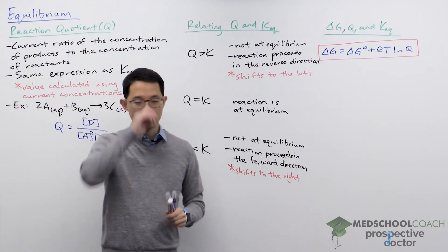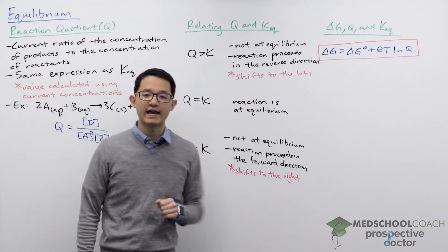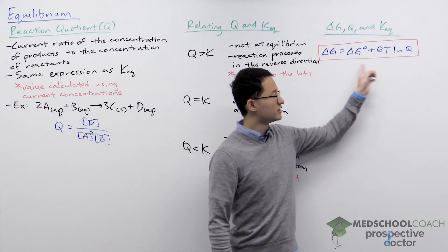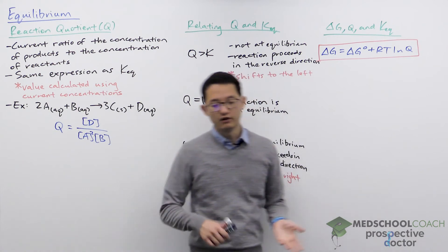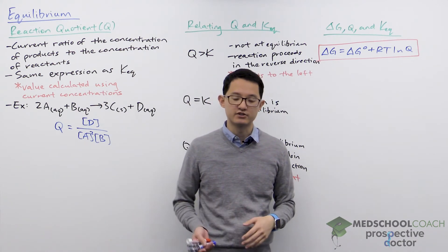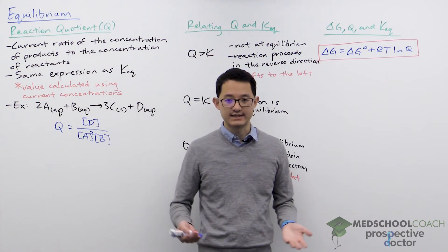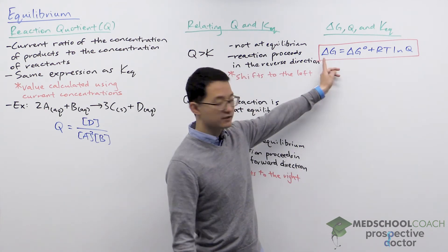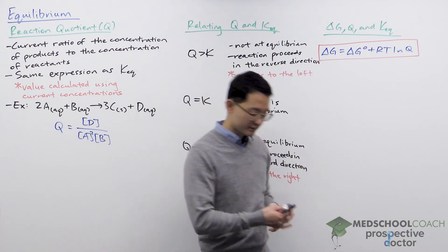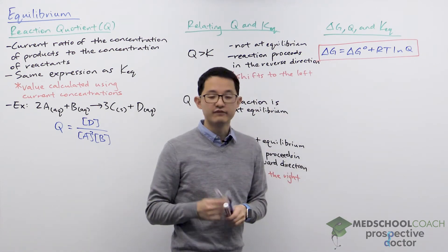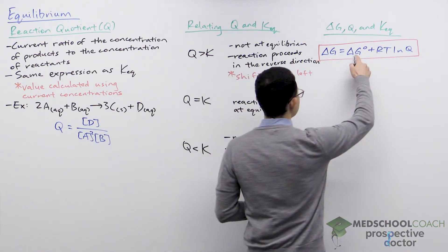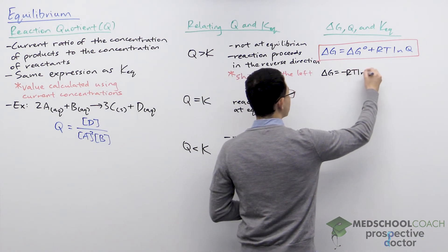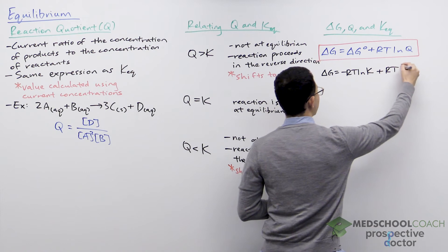Another important topic is relating delta G with Q and K_eq. The key equation is: delta G = delta G° + RT ln Q. In our last video we only looked at free energy change at standard conditions, but if your reaction is not at standard conditions, you need delta G to determine spontaneity. Substituting the expression for delta G° gives: delta G = −RT ln K + RT ln Q.